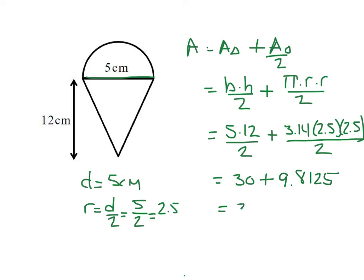When I add that to 30, I get 39.8125. And the units of measure are going to be centimeters squared. And remember whenever we find area of circles, this is just an estimate of the area. So my area is approximately 39.8125. And if I want to round it to the nearest tenth, I would say it's 39.8 square centimeters.